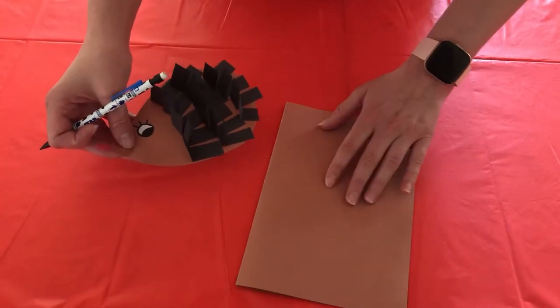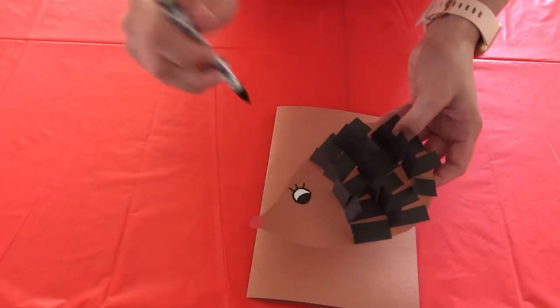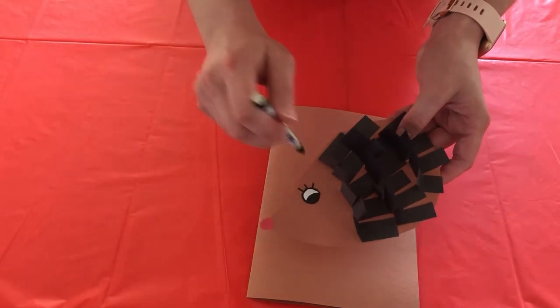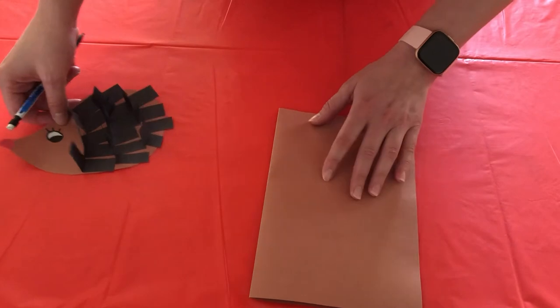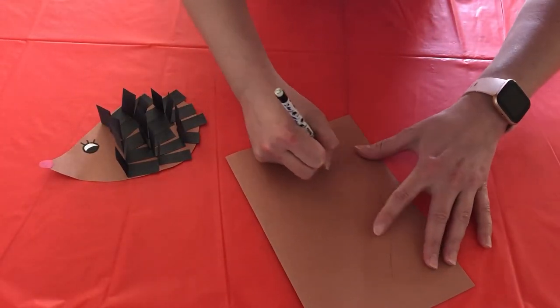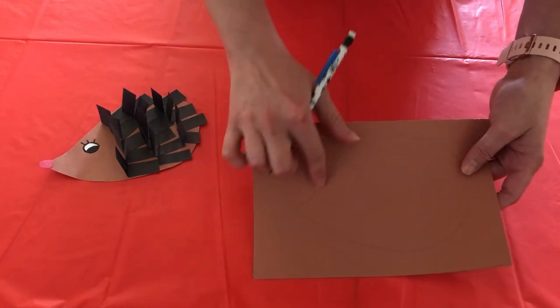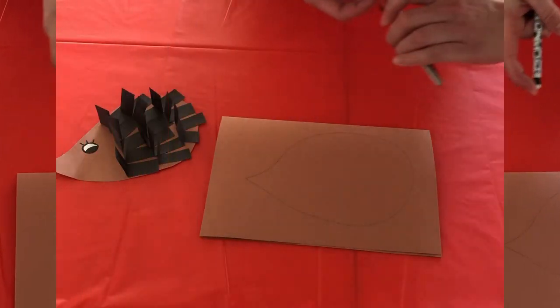So what you're going to do is you're going to make kind of like a giant teardrop, but you want to also have a little curve here for its face so it has a little shape there. So I'm going to do that here. So make sure you have a little dip there. Let's go ahead and cut this out.